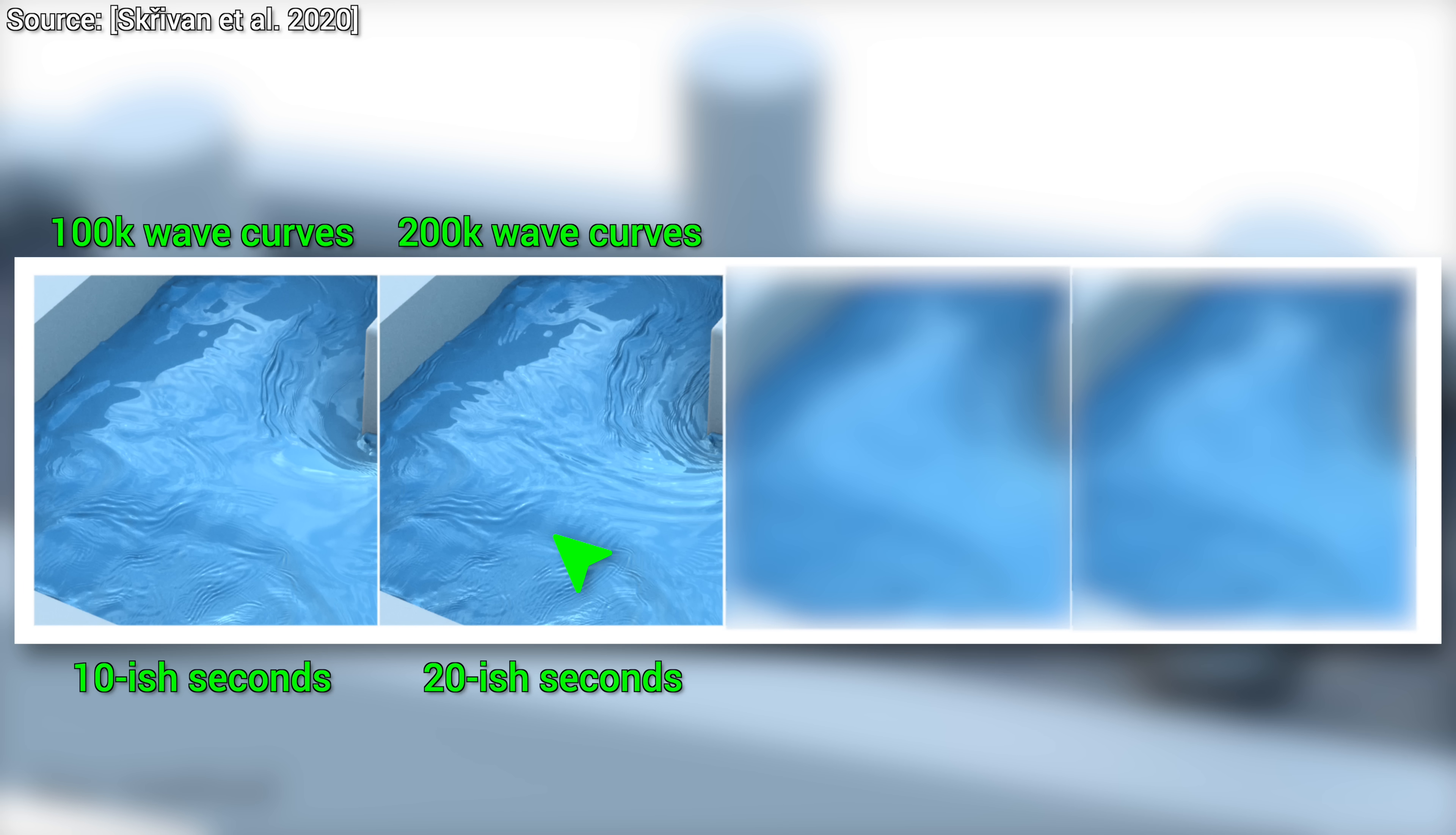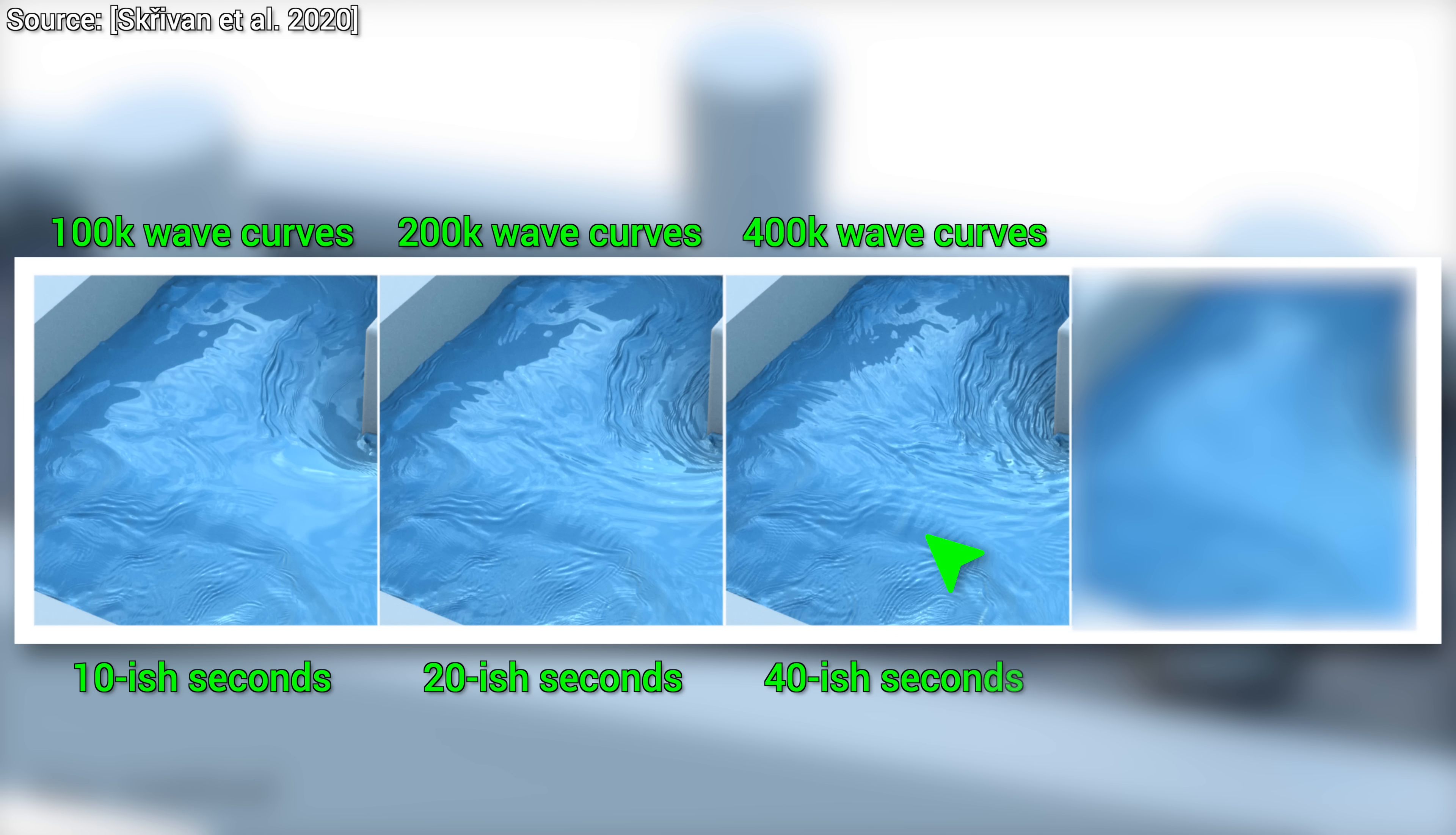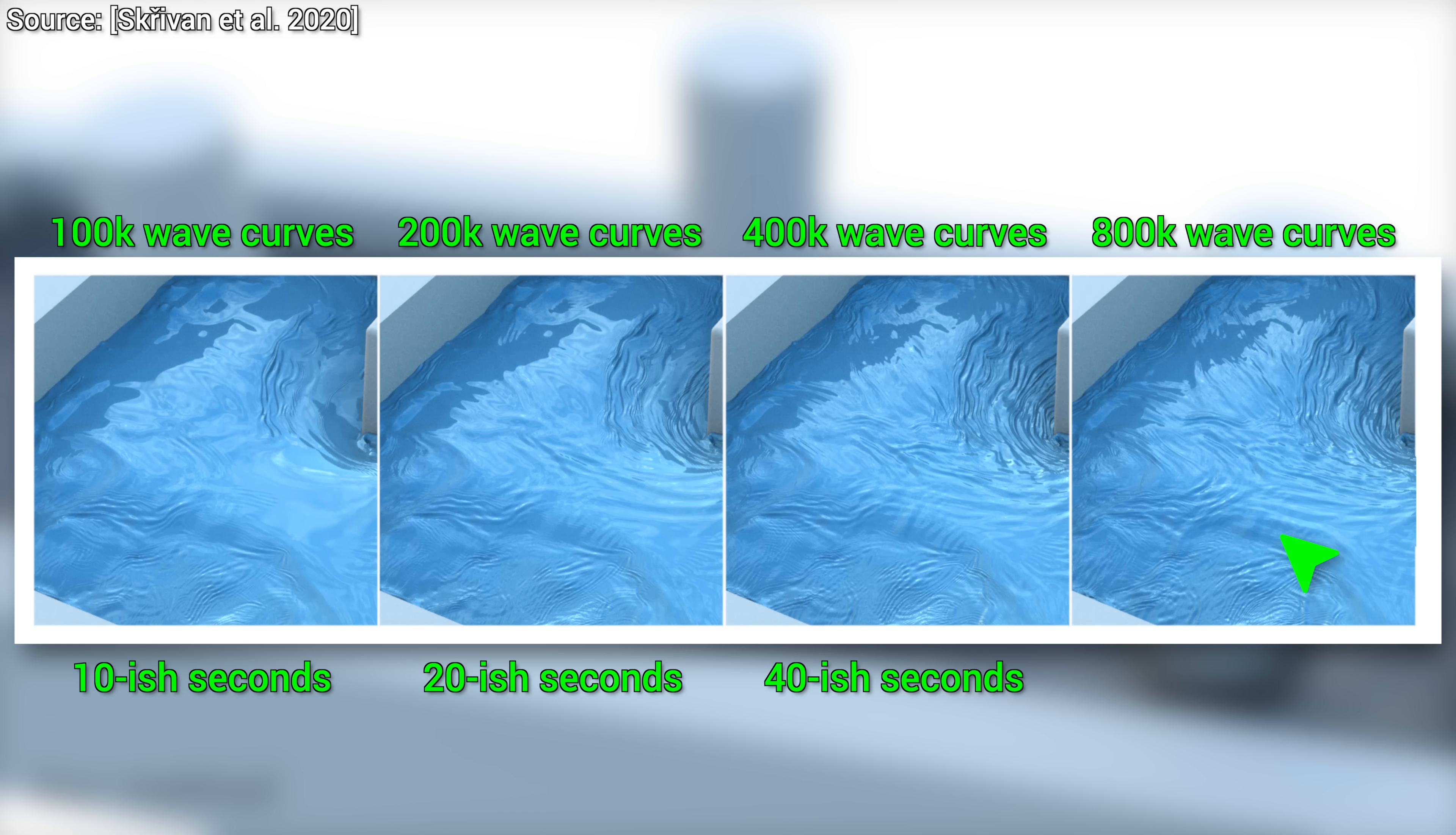Better, we are getting there. And for 400k wave curves, 40 seconds, and for 800k curves, yes, you guessed it right, 80-ish seconds. Double the number of curves, double the execution time. This is what the linear scaling part means.